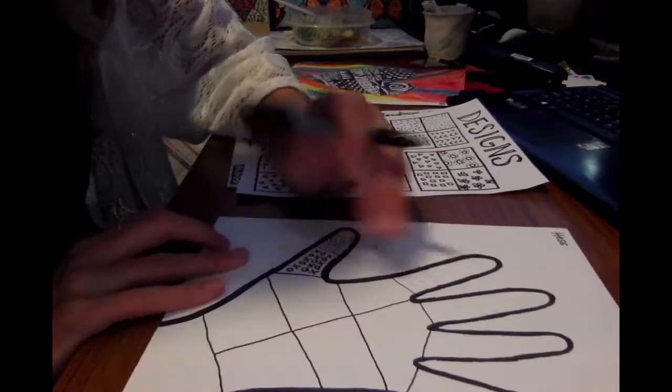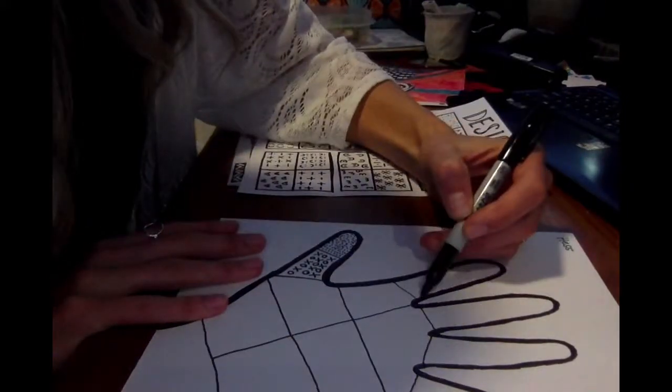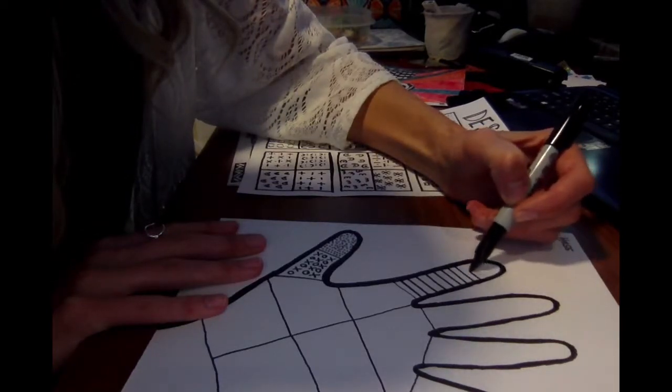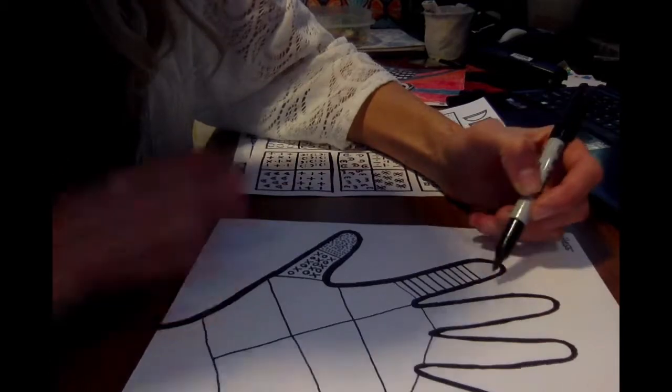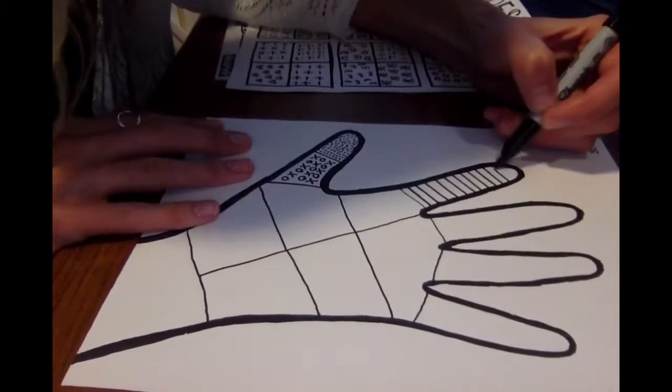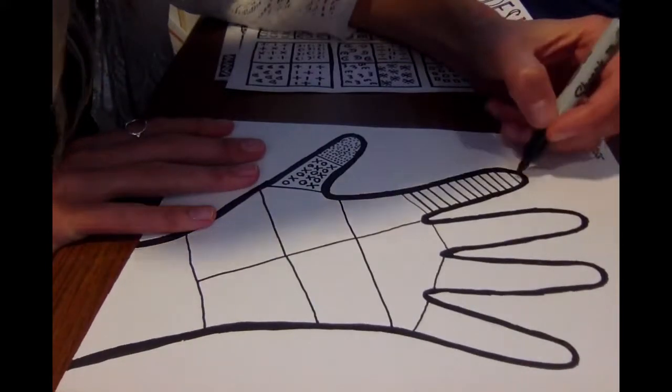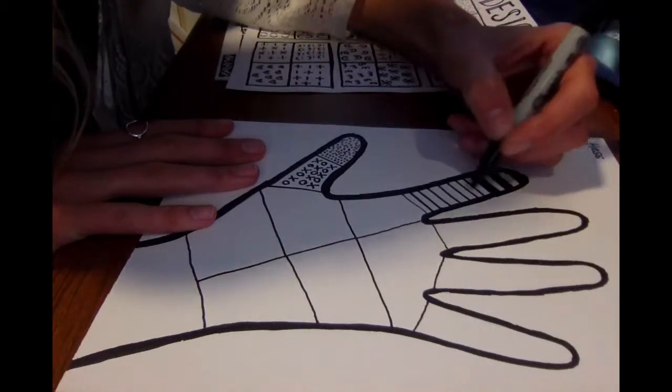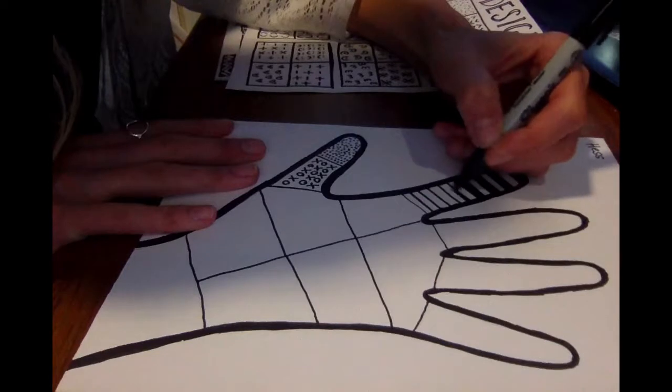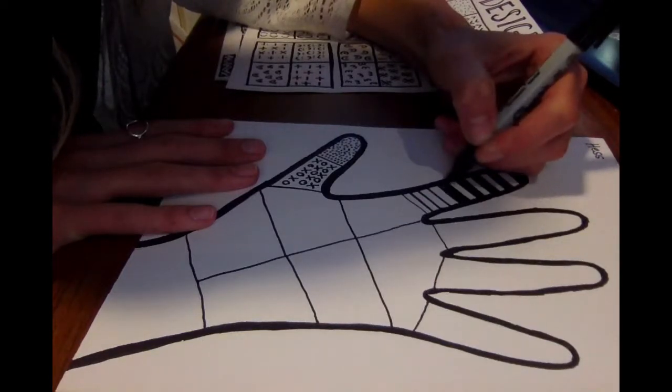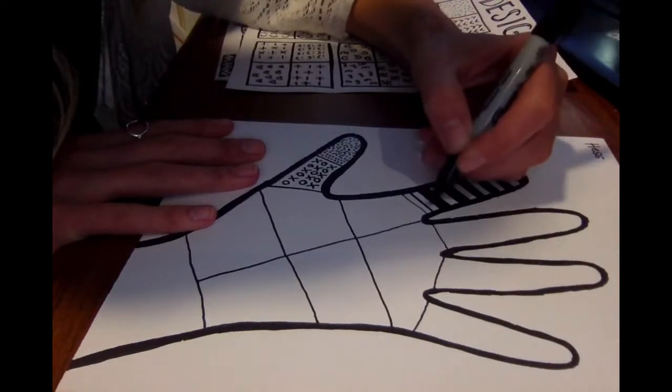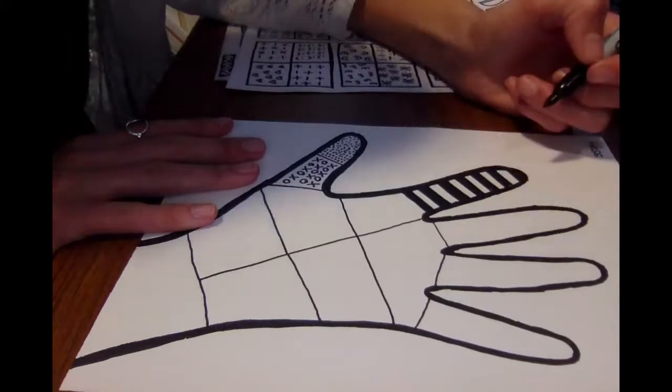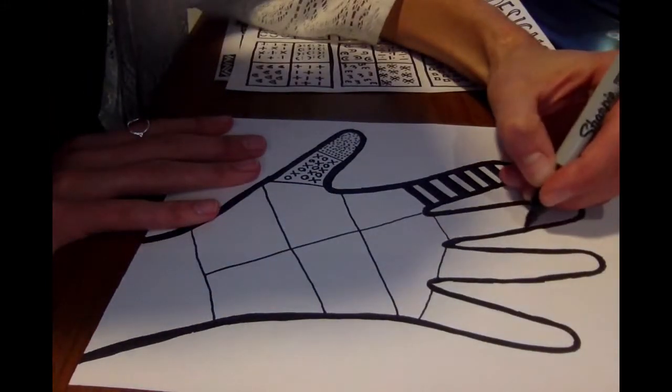Now for this finger I'm gonna do a striped pattern, just doing straight lines across making sure I stop so I don't go off of the finger. Now to make this even look more interesting I'm gonna color in between to show my contrast. That looks pretty cool.